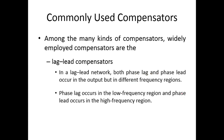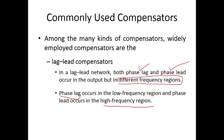Now for the lag-lead compensator: in a lag-lead network, both phase lag and phase lead are present in the output, but in different frequency regions. In the lag-lead compensator, we have a phase lag in low frequency regions and a phase lead in high frequency regions. So because it has both phase lag and phase lead — but in different frequency regions — we call this compensator the lag-lead compensator.